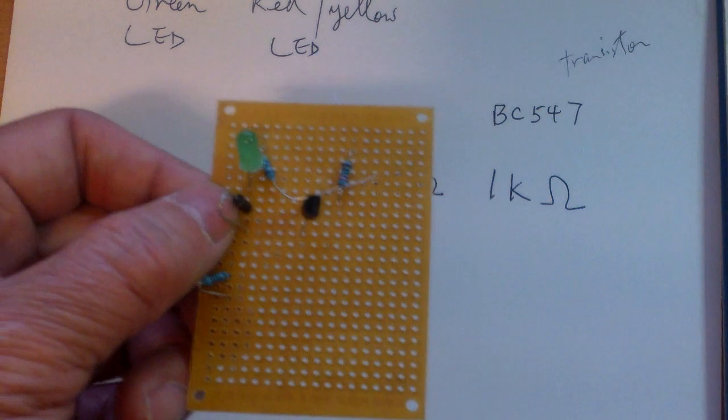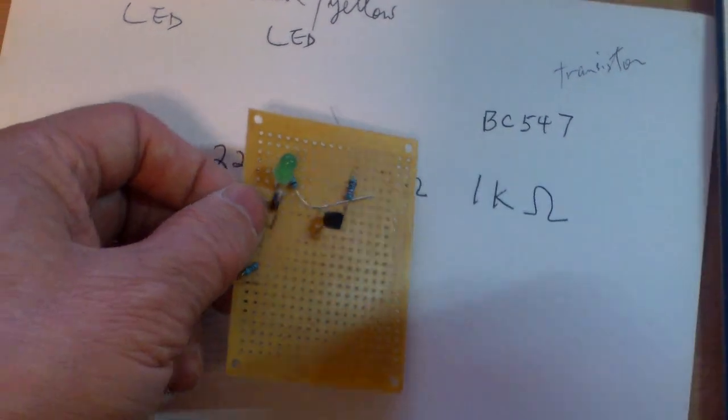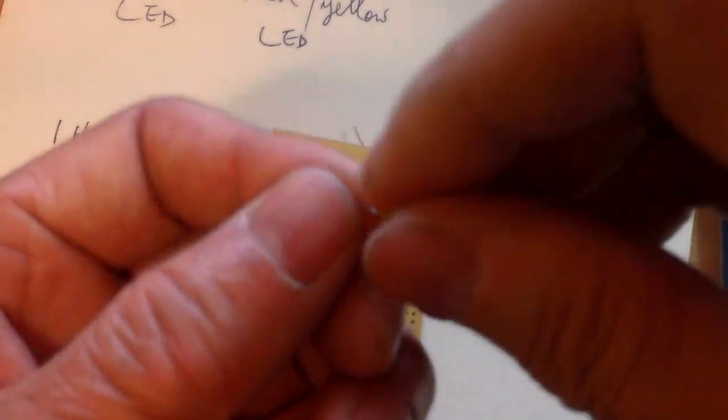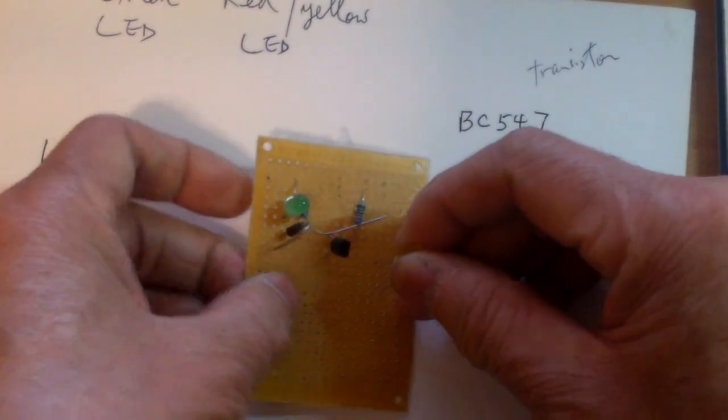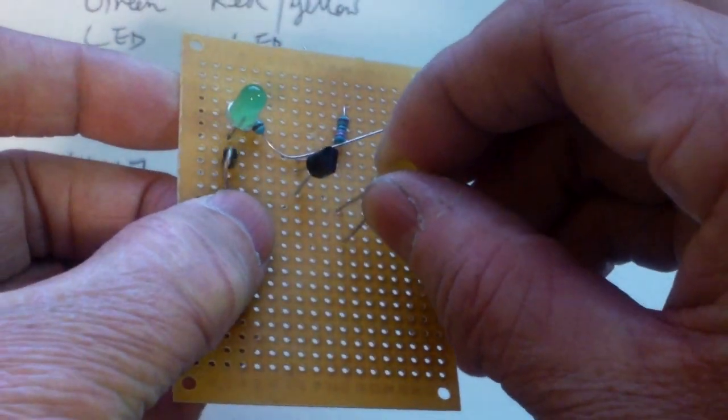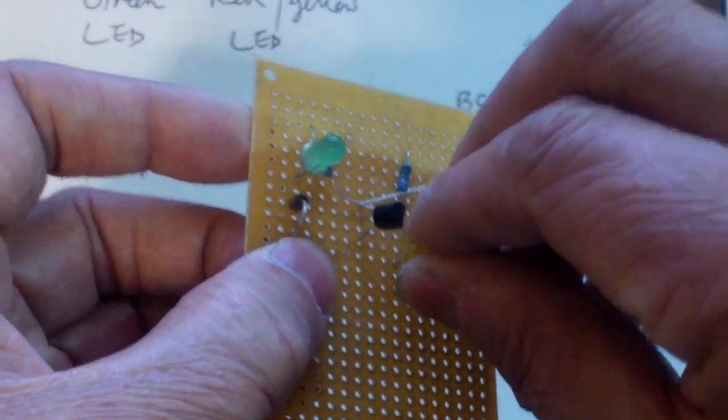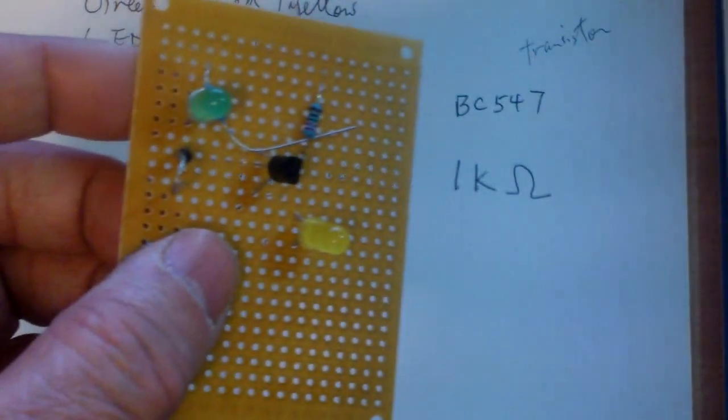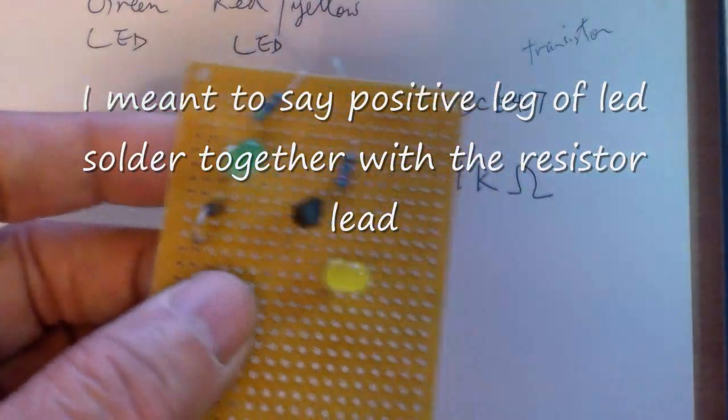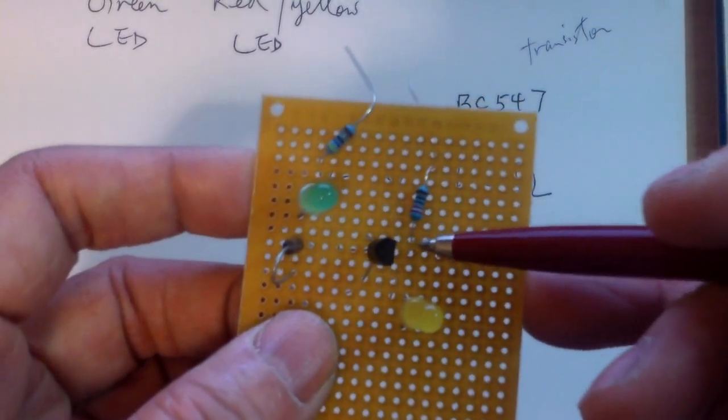Now the last thing that you have to do is to connect your yellow or red LED. Again, the positive towards the resistor. You plug it in. And the positive of the LED you solder with the resistor, the 220 ohm resistor.